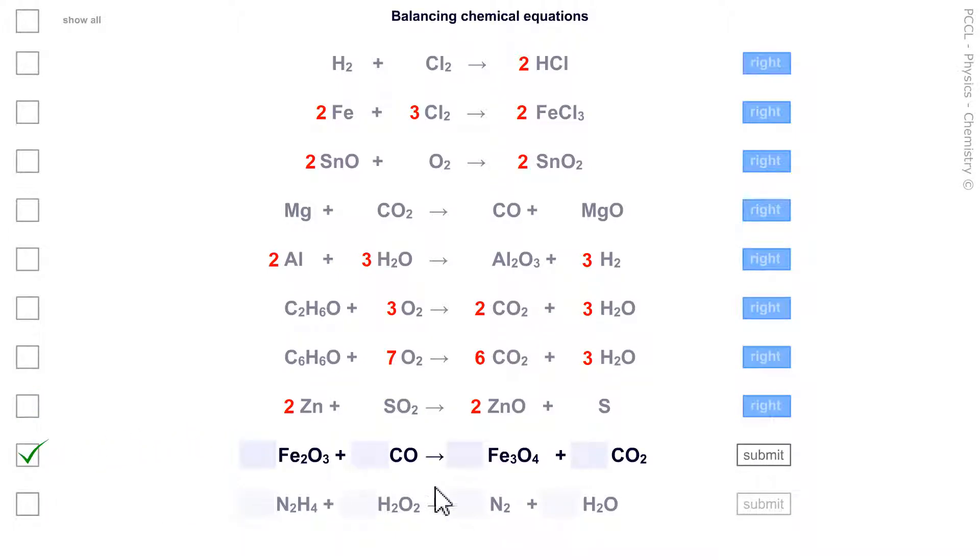Fe2O3 and Fe3O4. Here again is a 2 and a 3. This is the situation already seen on the second line. Where there is a 2, I choose the coefficient 3 and where there is a 3, I multiply by 2. Oxygen. 2 times 4 equals 8 plus 2 equals 10 on the right. And 3 times 3 equals 9 plus 1 equals 10 on the left.